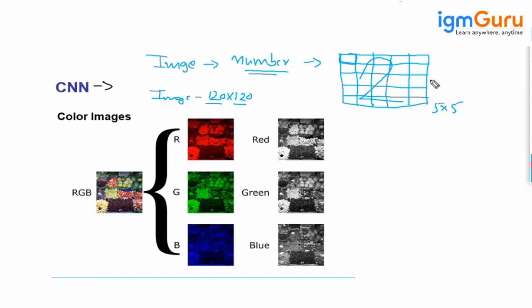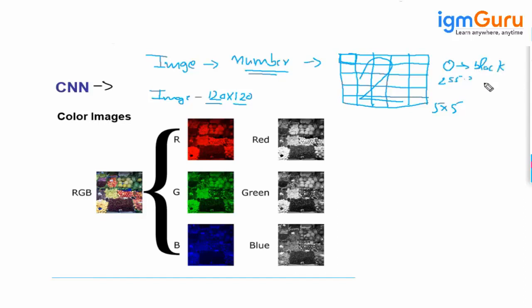In the case of a black and white picture, zero represents the pure black color and 255 represents the pure white color.